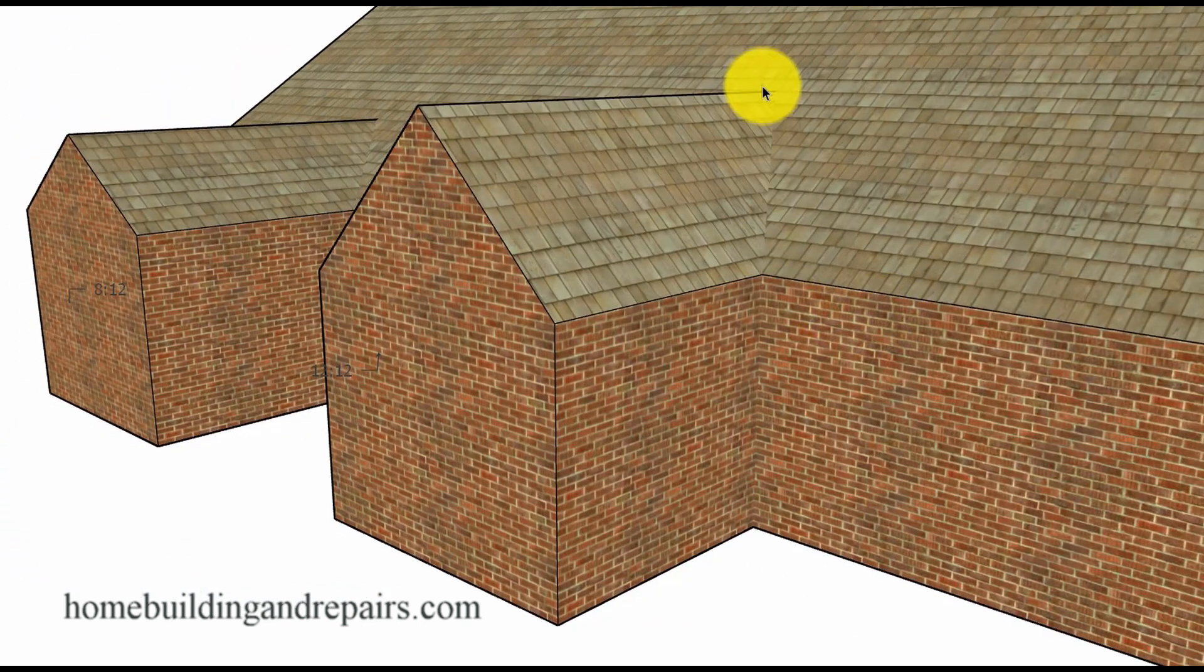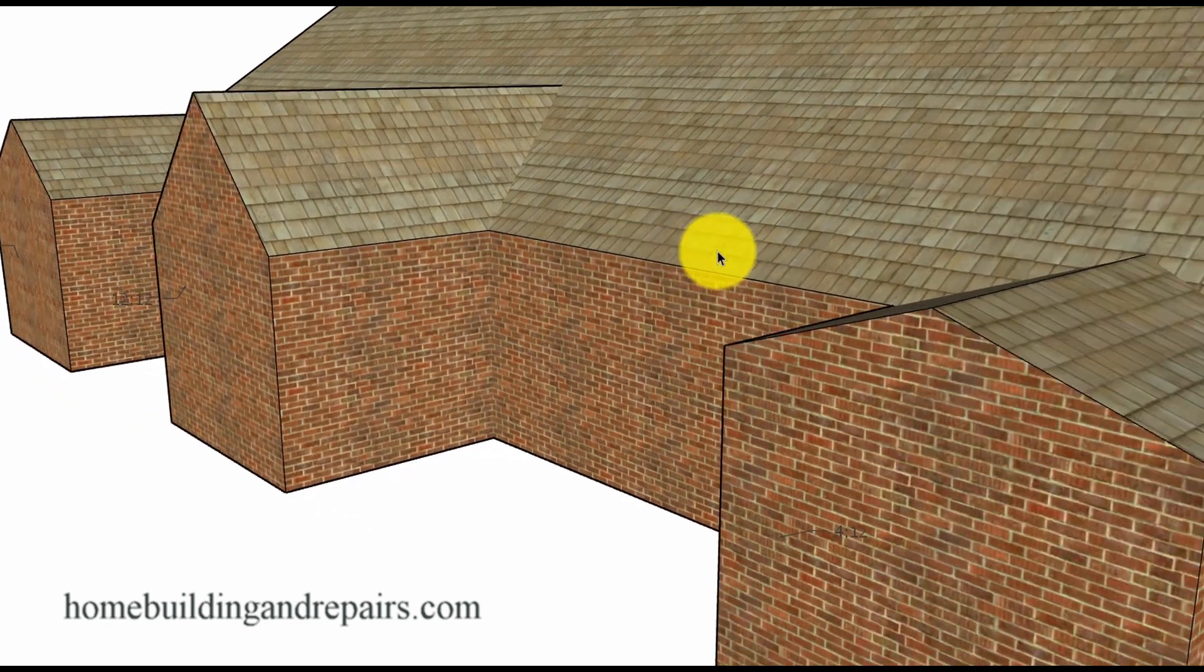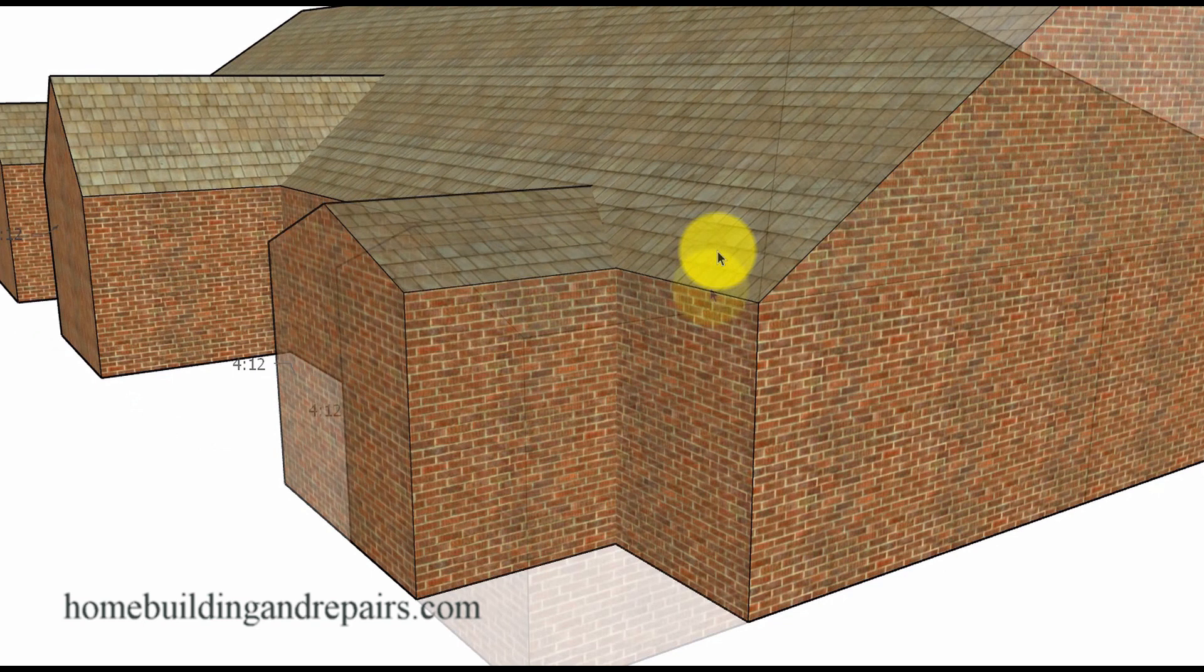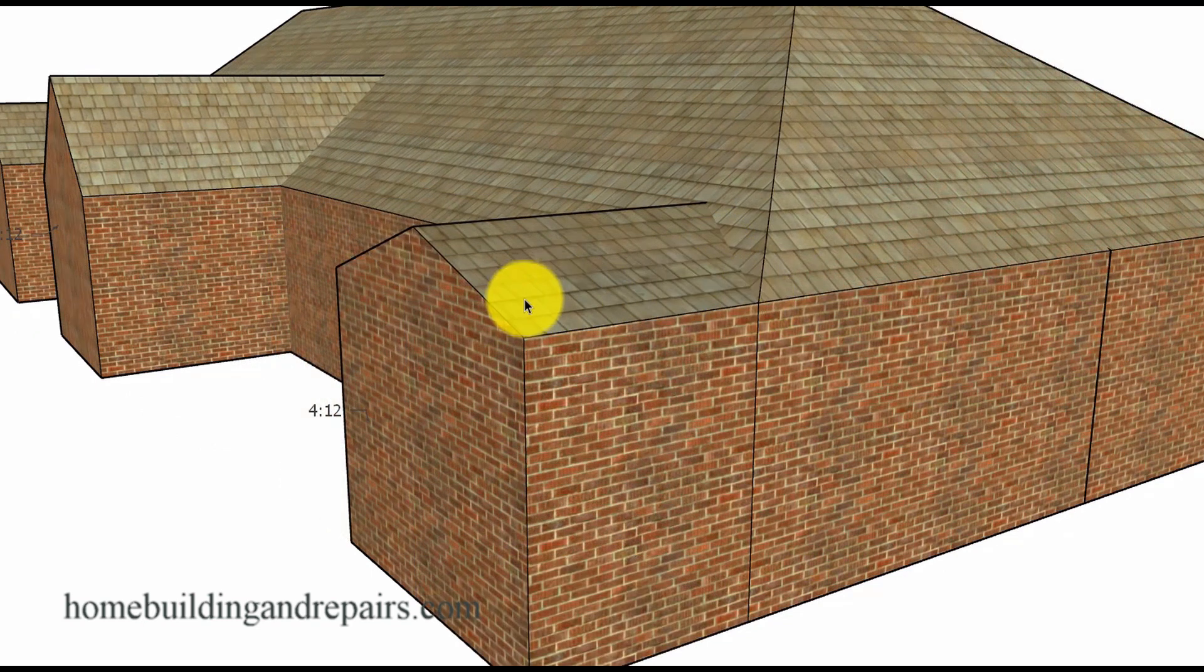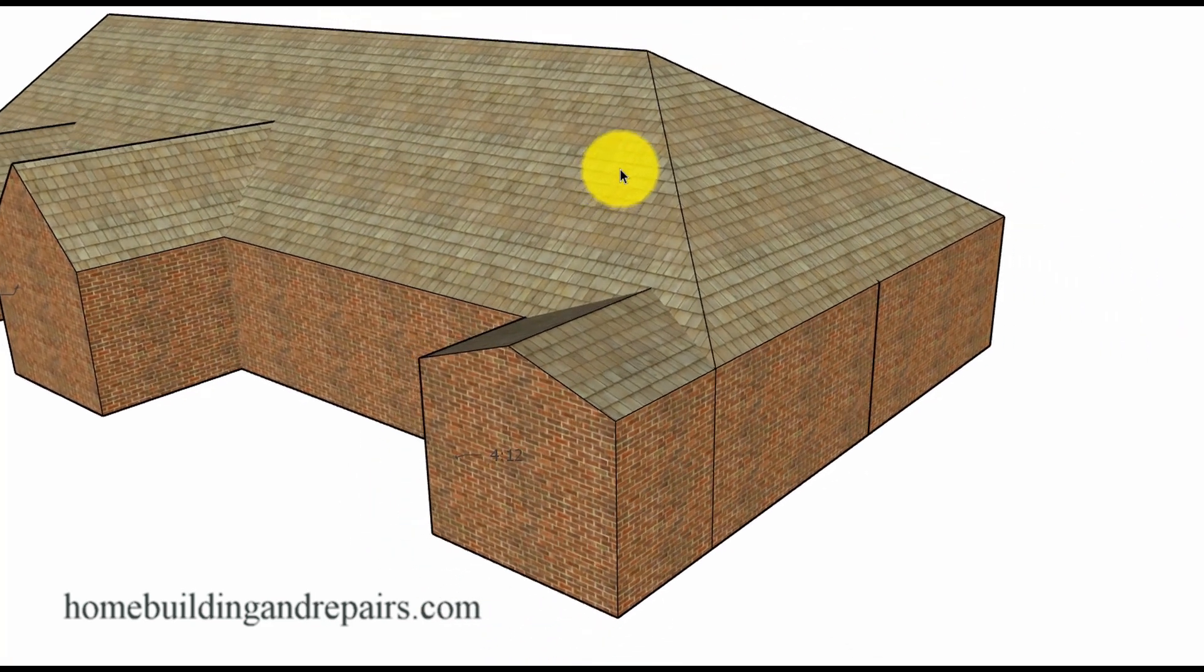And again you can see the difference in the valley connection lines. And the last one on the end is a 4 and 12 roof pitch. And if we bring it to the end and we want this angle of the roof to line up with this angle of the roof, then you can see again where we're going to need to lower this roof pitch here to match it to this one here.